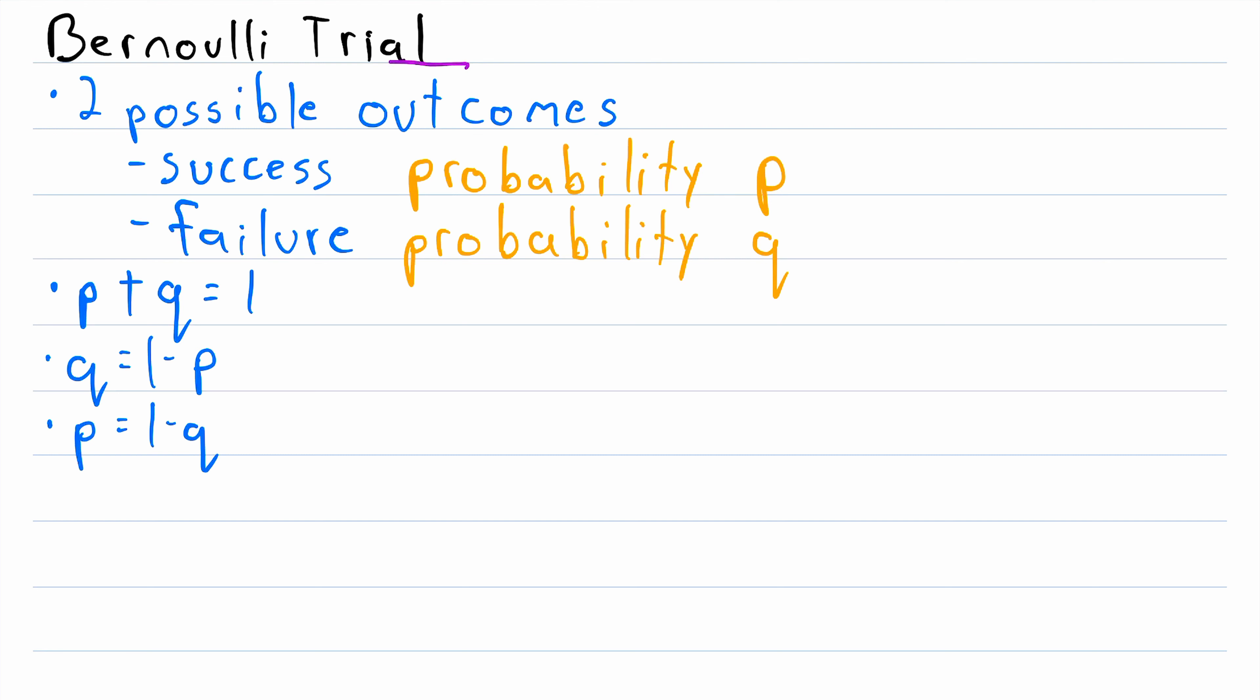And if we wanted to, we could easily represent the outcomes of a Bernoulli trial with a random variable. We could say that if the Bernoulli trial results in a success, then the random variable x is equal to one, and if the Bernoulli trial results in failure, then x is equal to zero. If this is the case, then we say that the random variable x follows a Bernoulli distribution, and it takes on the value one with probability p, and takes on the value zero with probability q.